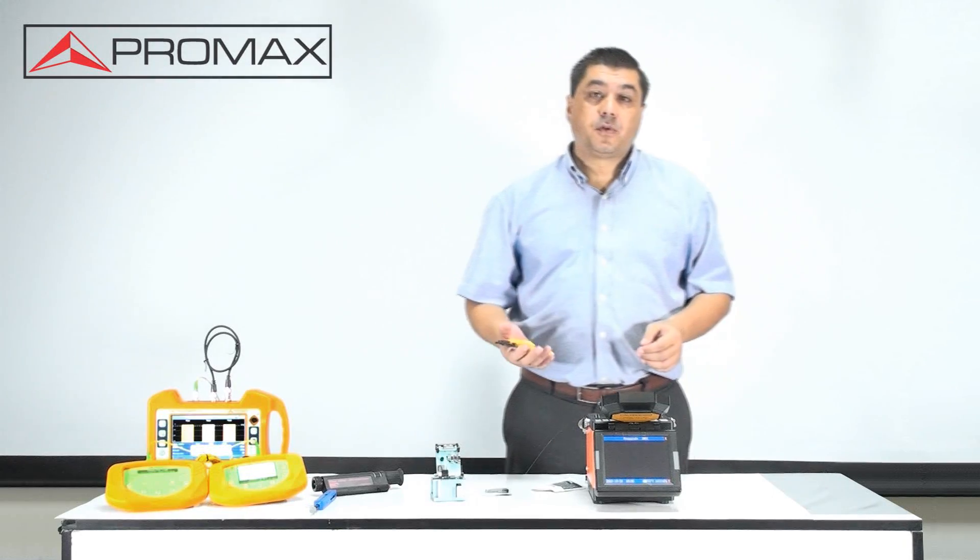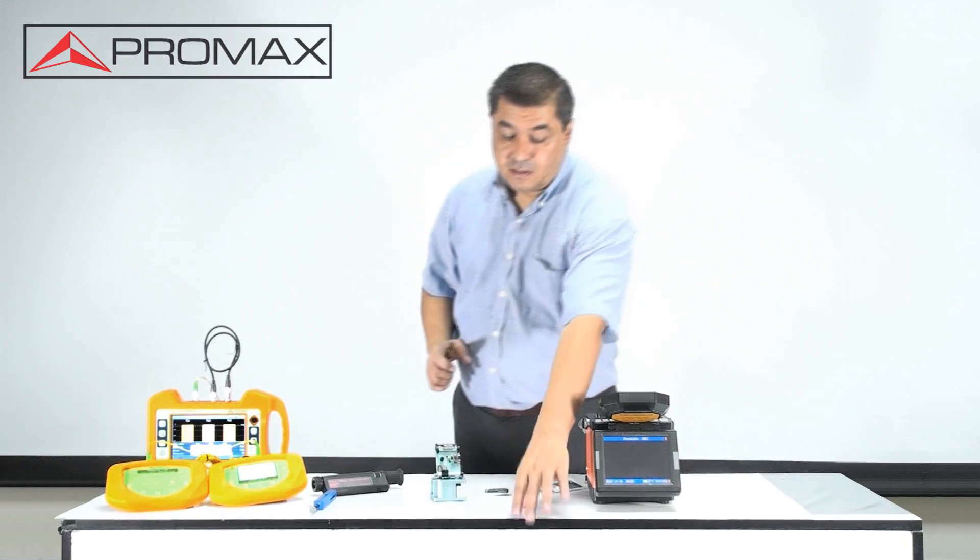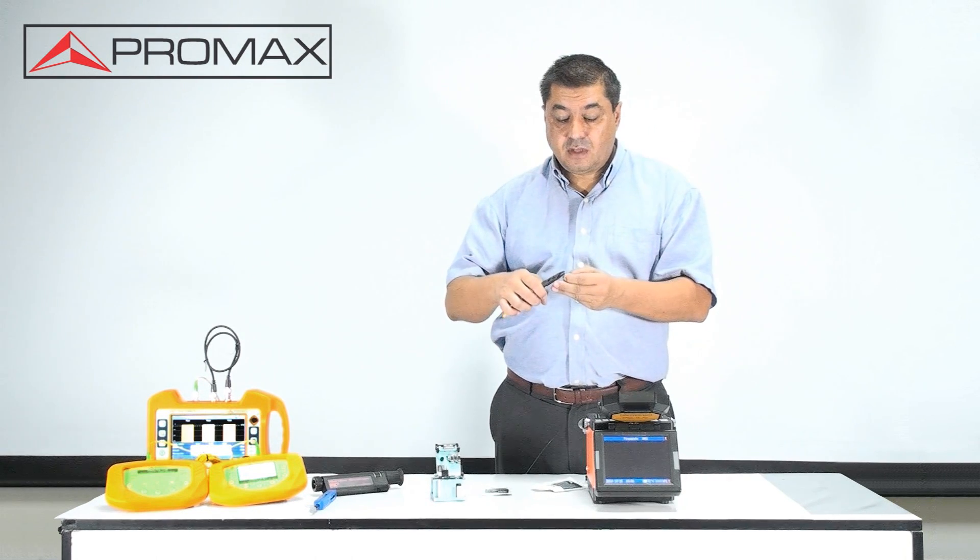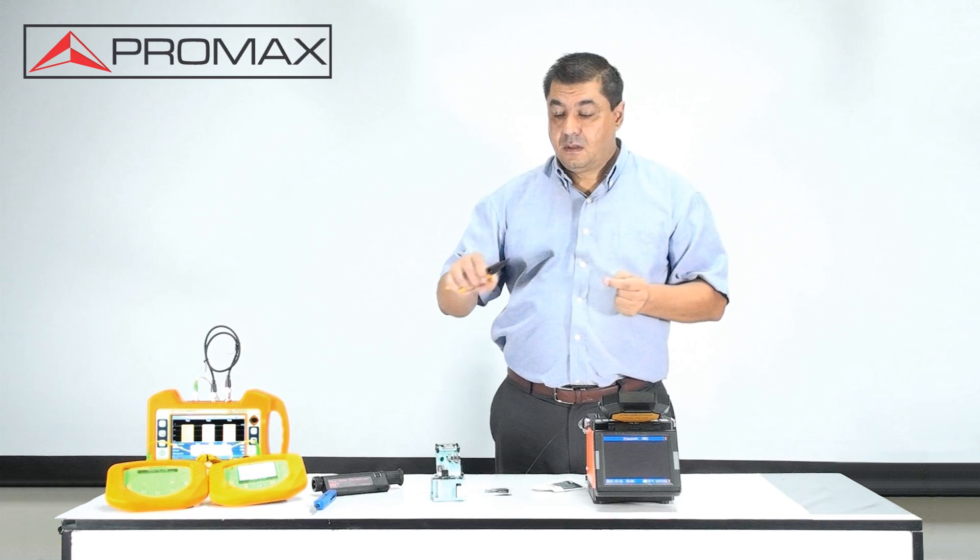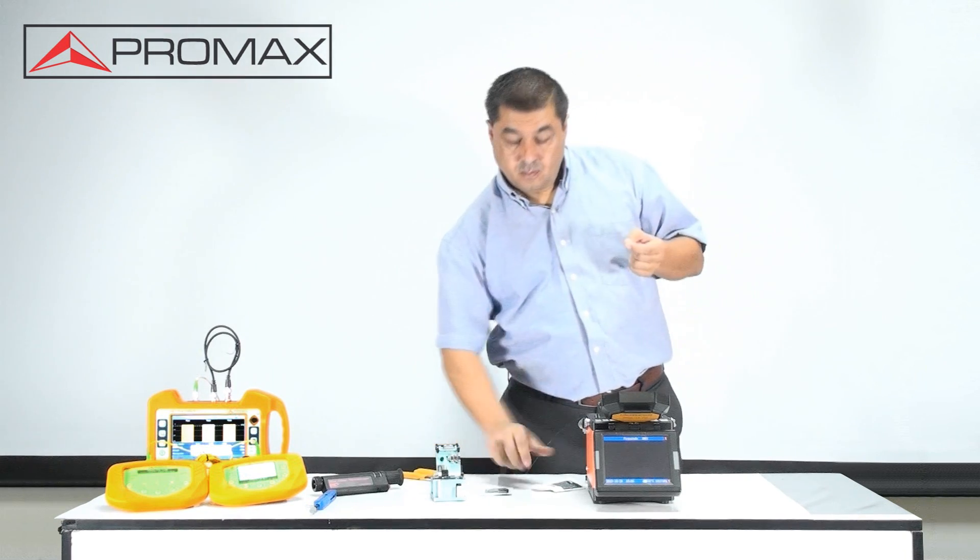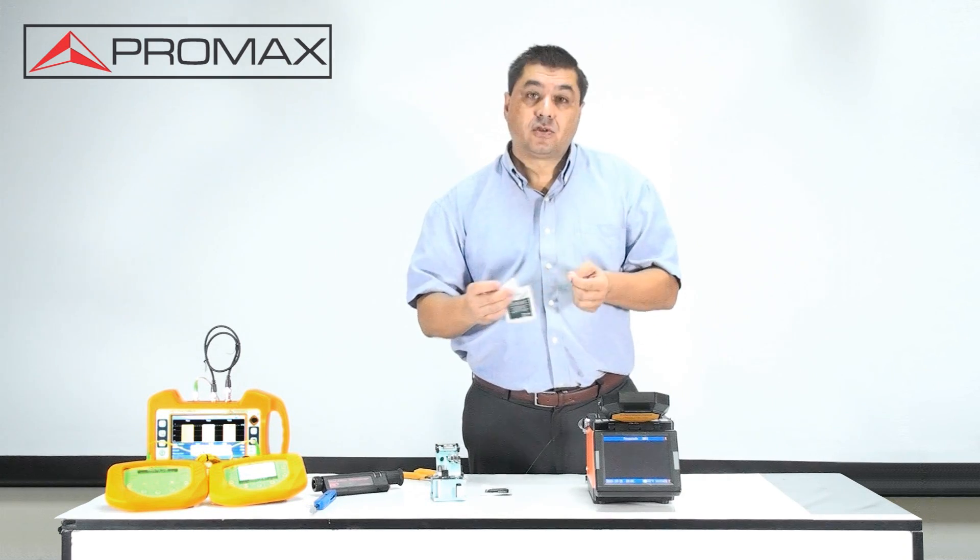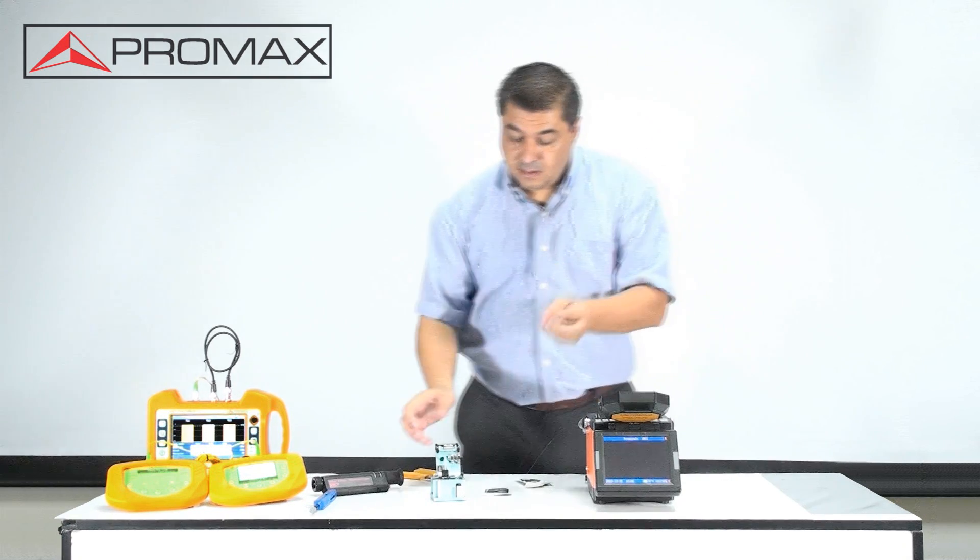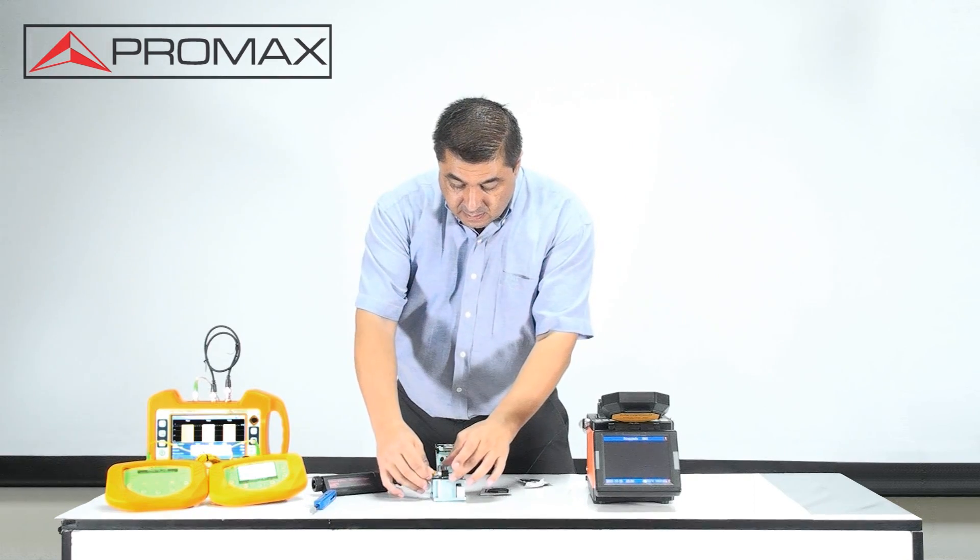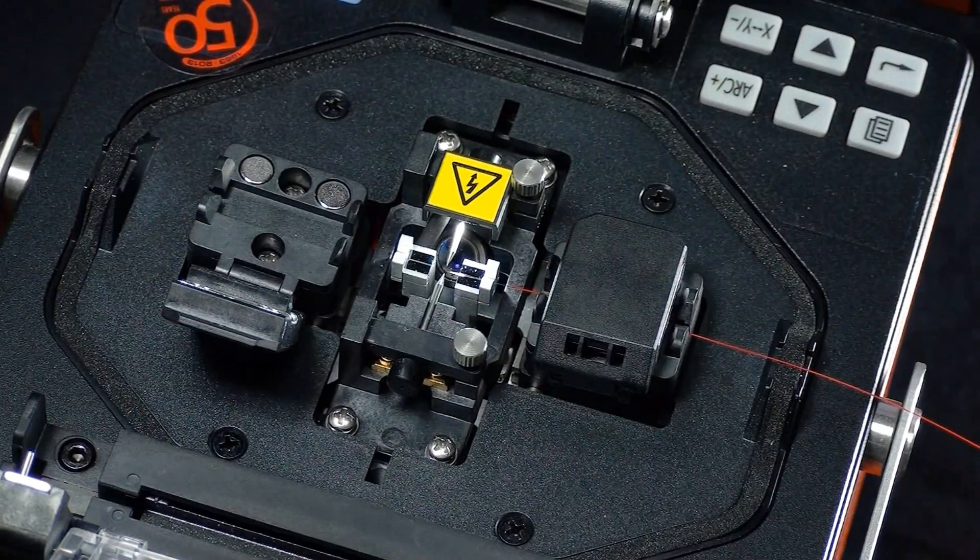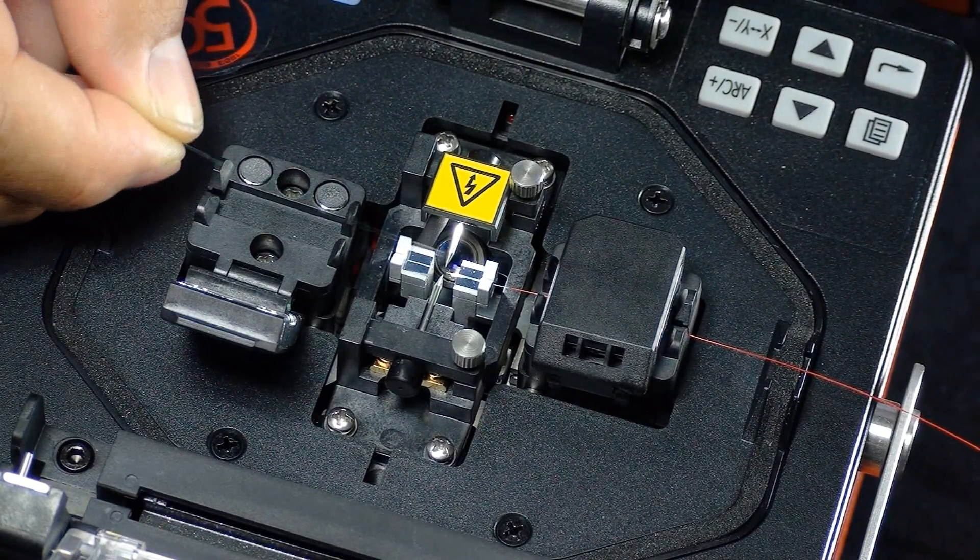We will do the same process with the other fiber end. Again, we peel the plastic layer of the fiber with the stripper and we clean the remaining plastic waste. We cut again and we place the fiber into the fusion splicer.